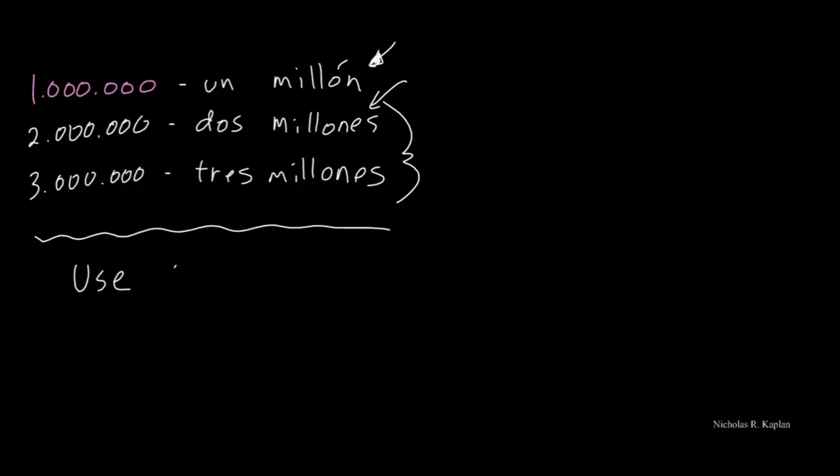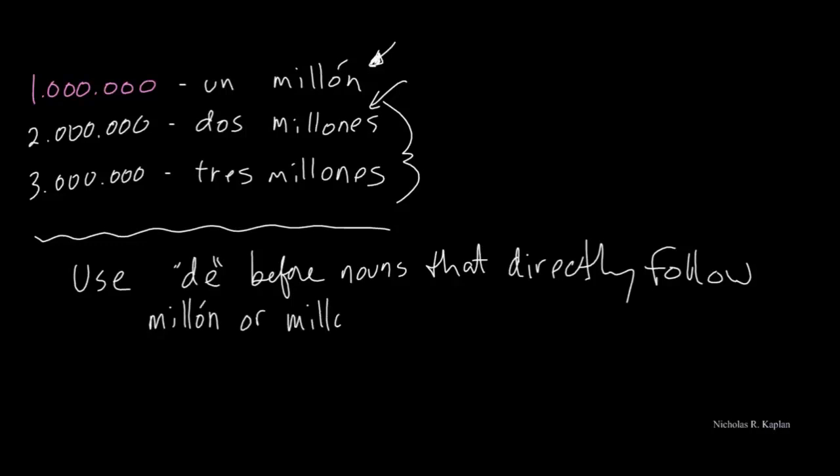The final thing that we need to know is that we have to use the preposition 'de' before nouns that directly follow 'millón' or 'millones'. So if we wanted to say, I want a million dollars: 'Quiero un millón' and then I need to say dollars. Because dollars comes right after our number, we have to put in 'de'.